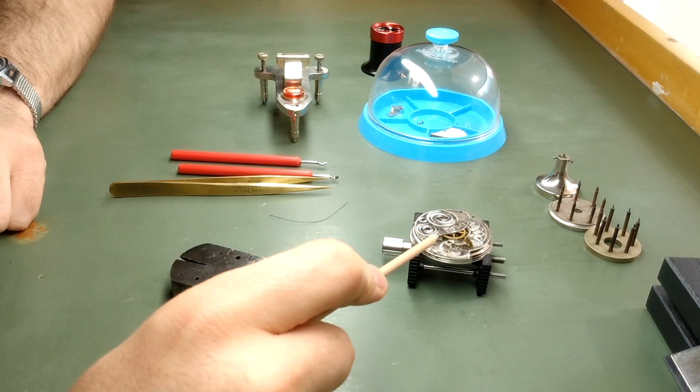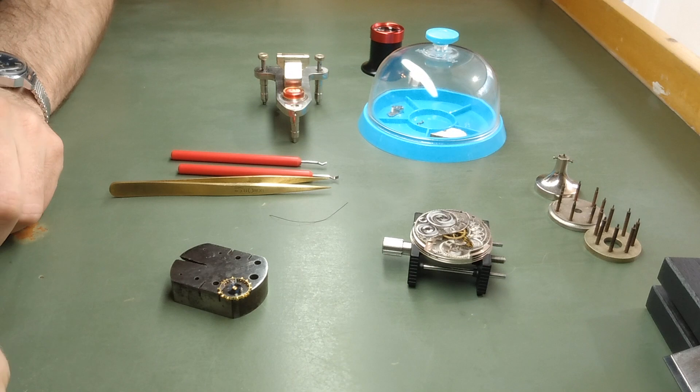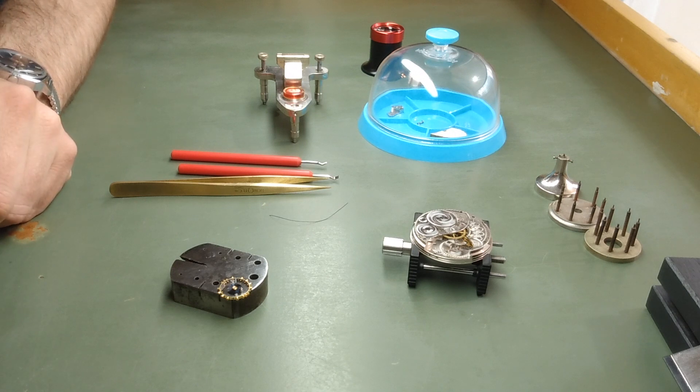Hi everyone. I have here a 7-Jewel Elgin pocket watch from about the turn of the last century, which I'm gradually restoring and which has required a lot of work.